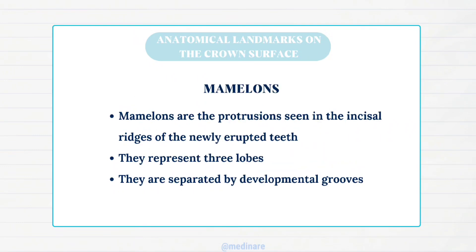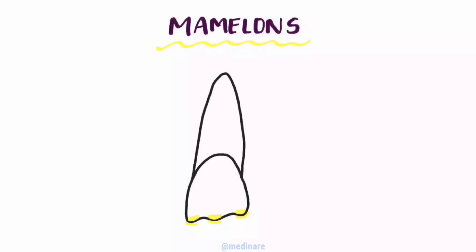Mamelons are the protrusions seen on the incisal ridges of newly erupted permanent incisal teeth. They represent three lobes from which the labial surfaces form and are separated by developmental grooves. Here we can see the mamelons on the anterior teeth incisal edge.